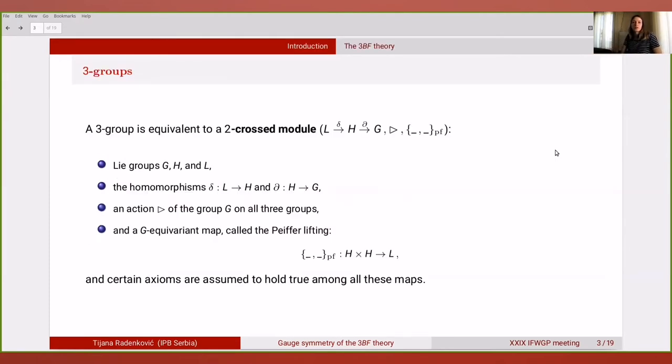In the same way that the underlying structure of the BF theory is a group, the underlying structure of the 3BF theory is a 3-group. The 3-group is equivalent to a 2-crossed module, and it is defined with three groups G, H, and L, the homomorphisms from group L to group H and from group H to group G, then an action of group G on all three groups, and a G-equivariant map called the Pfeiffer lifting that maps two elements of H to some element of L. Of course, certain axioms are assumed to hold among all these maps in order for this structure to be the 2-crossed module.